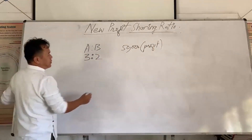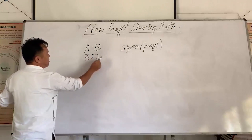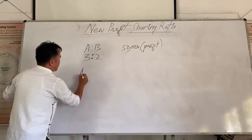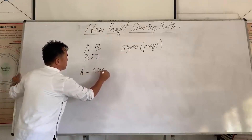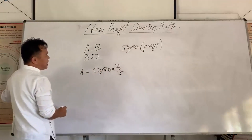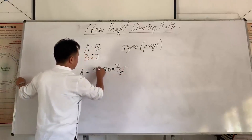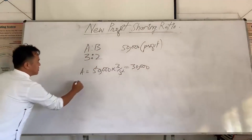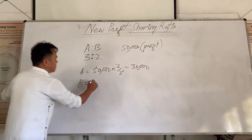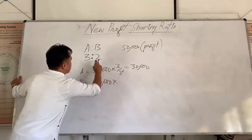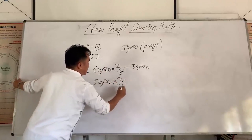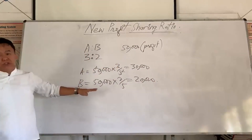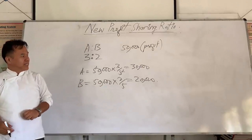If we distribute the profit between A and B in their own profit sharing ratio, then A will get 50,000 multiplied by 3 by 5, so A will get 30,000. B will get his share of profit which is 2 by 5, so B will get 20,000. This is the situation before admission of a partner takes place.